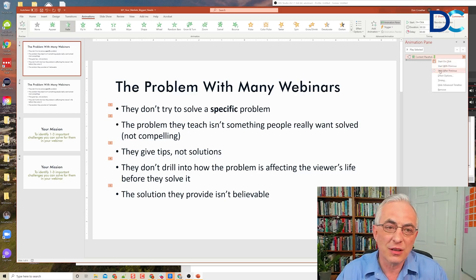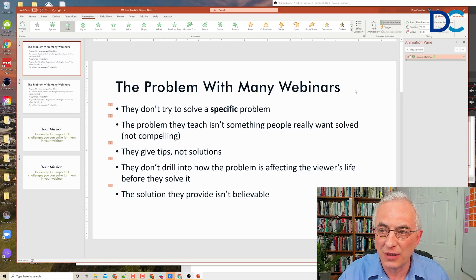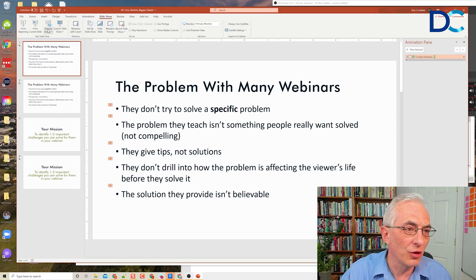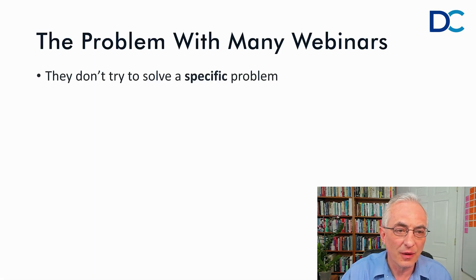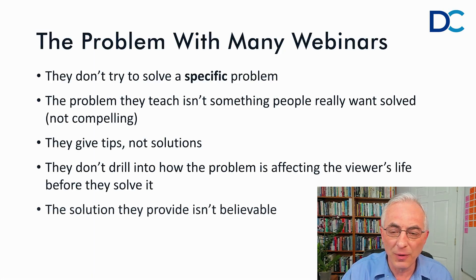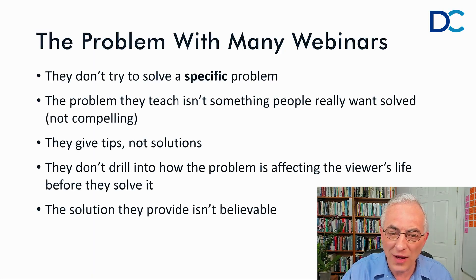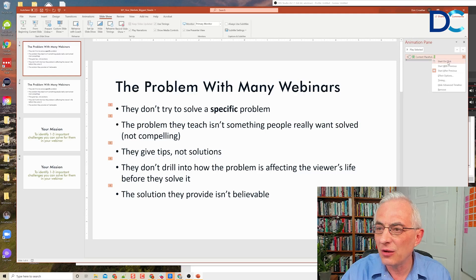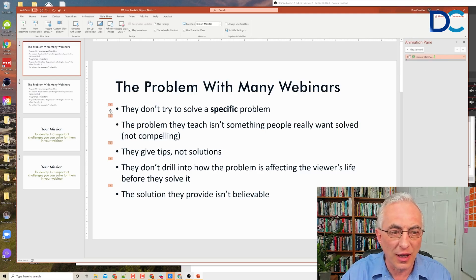Much of the time, the first time you do this, it's going to be set for 'Start After Previous.' So what will happen is when you actually run it, it puts them all on screen very fast — that's not what you want. So you simply click it and select 'Start on Click,' and notice how all the numbers go 1, 2, 3, 4, 5.